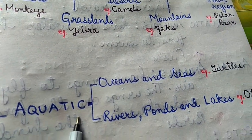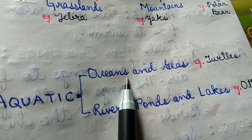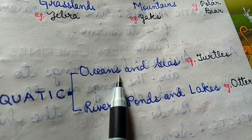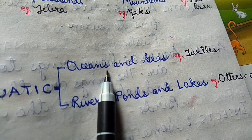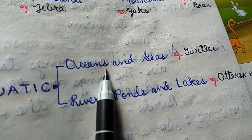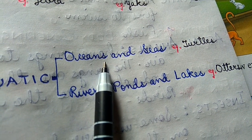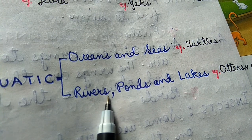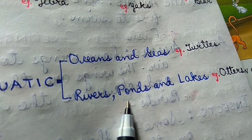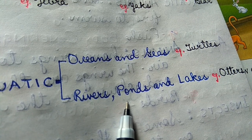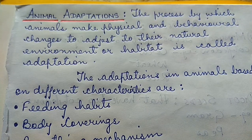Next comes the aquatic habitat. The first one is oceans and seas. About 70% of the earth's surface is covered by oceans and seas, which have salty water. Different species of fish and octopus live in the oceans and seas. Fresh water is present in rivers, lakes and ponds, and they are home to many kinds of fish, shrimps, turtles, etc.